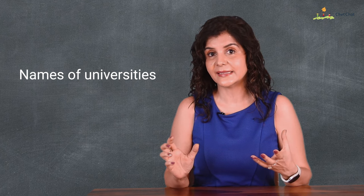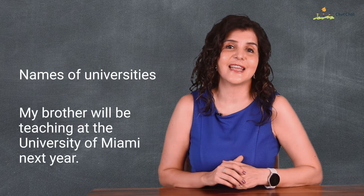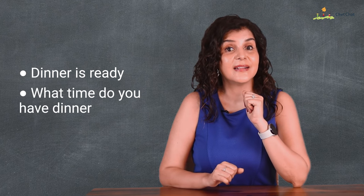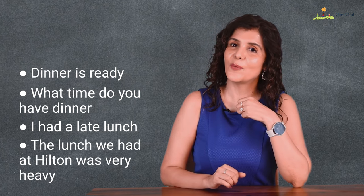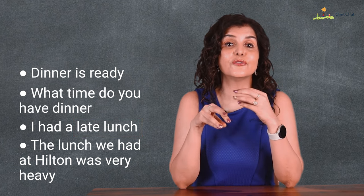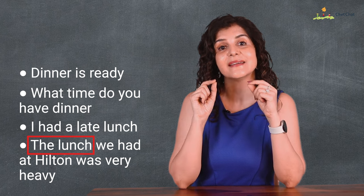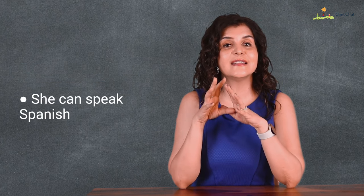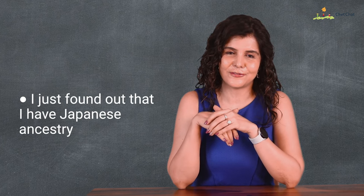No article is used before names of companies: I stopped using Twitter and Facebook when I got my Apple iPhone. Names of universities: Scarlett finished her undergrad at Oxford and will transfer to Stanford. But if we say the University of Michigan, we use the: my brother will be teaching at the University of Miami. We usually do not use articles before names of meals in a general sense: dinner is ready; what time do you have dinner? Articles are used when there's an adjective — I had a late lunch — or when referring to a specific meal: the lunch we had at the Hilton was very heavy.